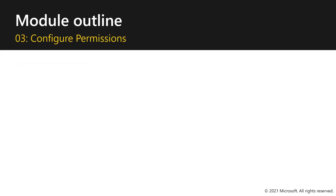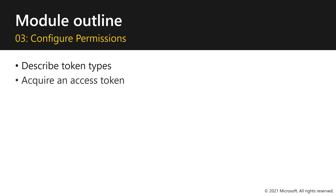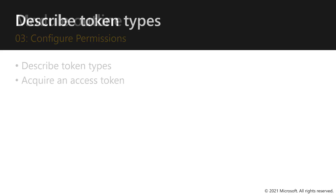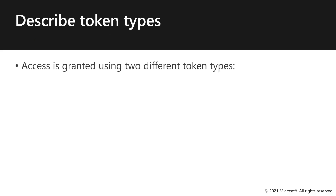In this video, we'll describe token types and how to acquire an access token. Access is granted using two different types of tokens: the Azure AD token and the Embed token. Let me now describe each token type.